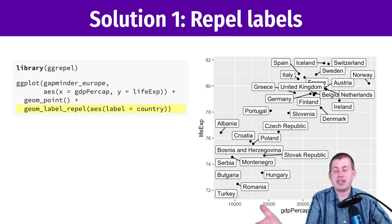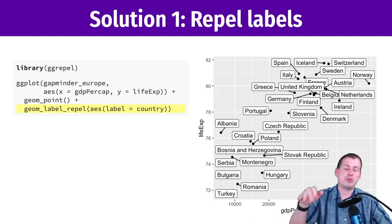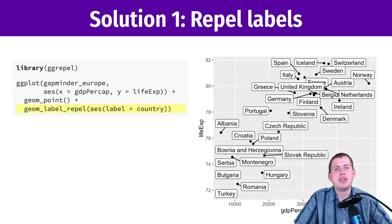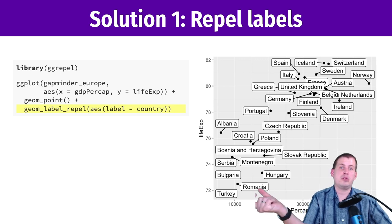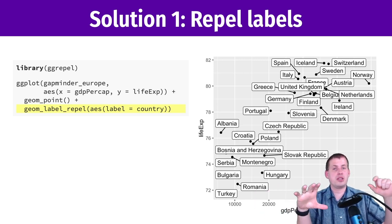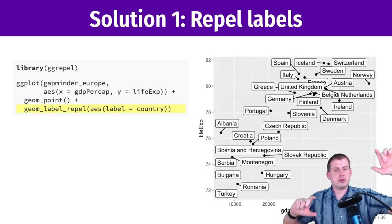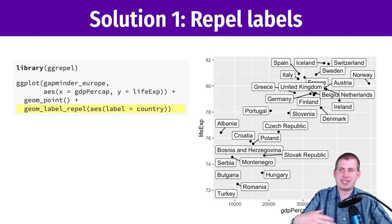This is Gapminder data subsetted to just Europe, and even just Europe has way too many points. It's helpful in situations where you don't have a ton of things — in yesterday's slope graph example, geom_text_repel worked because we were only working with about eight countries and eight labels to shift around. Once you get beyond a lot of points, it's going to be messy.